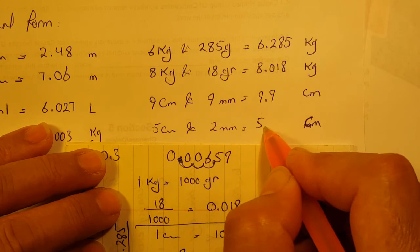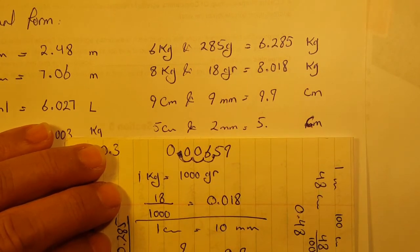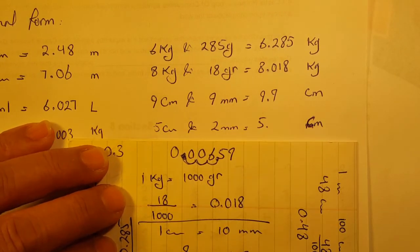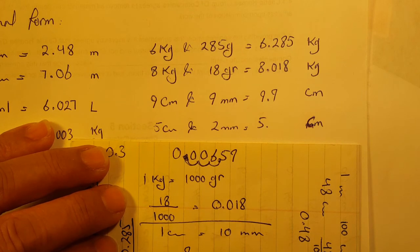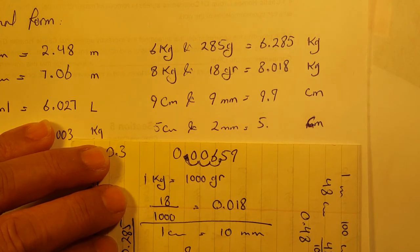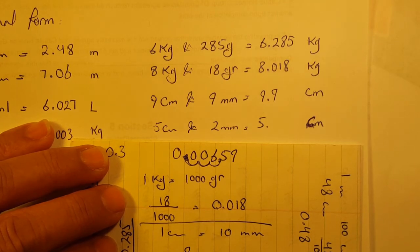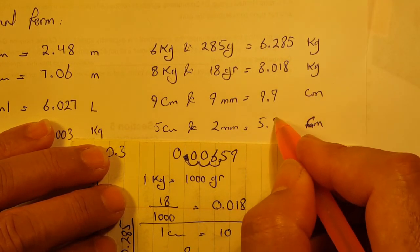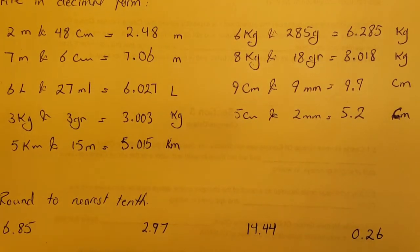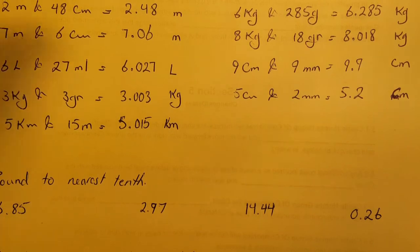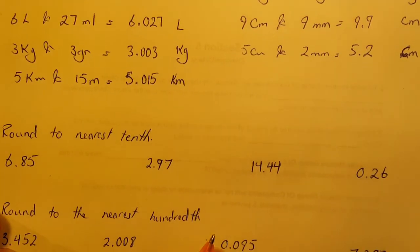For 5 centimeters and 2 millimeters in centimeters: 5 is the whole number. 2 millimeters — one centimeter equals 10 millimeters — so 2 millimeters divided by 10 is 0.2, giving 5.2 centimeters.